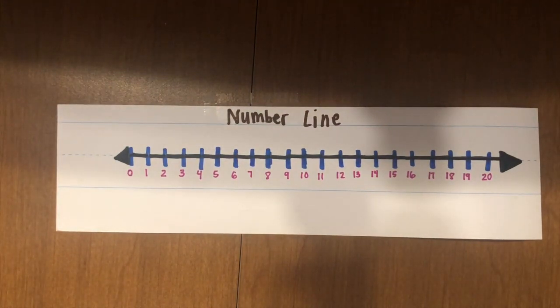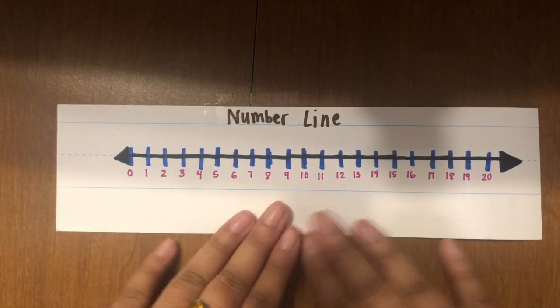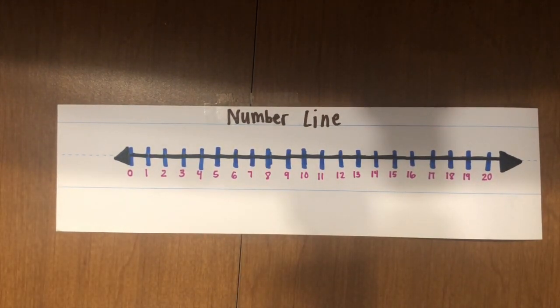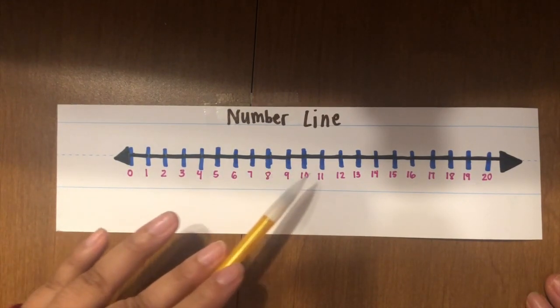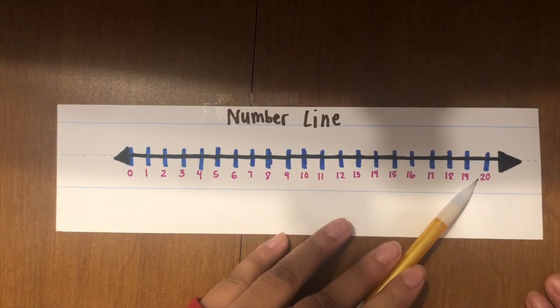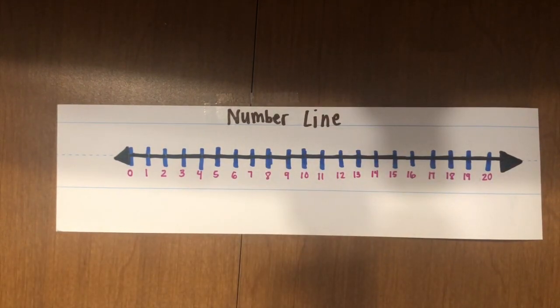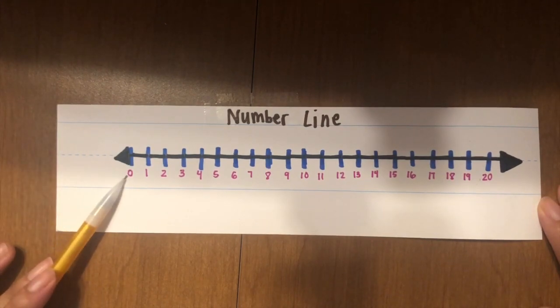Hello friends, Miss Jones here. Today we are going to practice counting on a number line. Here is my number line. It starts at zero and goes all the way to 20. Now when we usually count, we usually always start at zero, but today we are going to start on a different number and we're going to count all the way to 20.